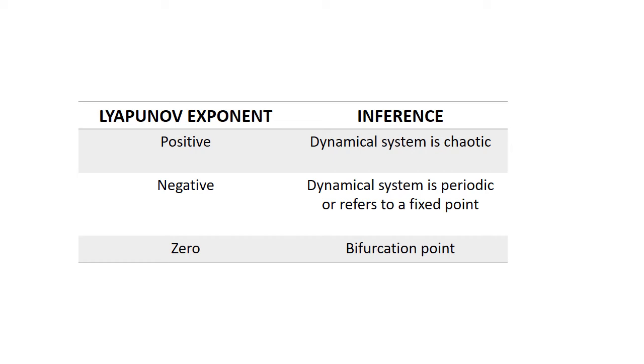If λ is negative, then the dynamical system is either periodic or refers to a fixed point. If it is 0, then an interesting phenomenon is taking place. That is, at this point, the dynamical system is undergoing a bifurcation.